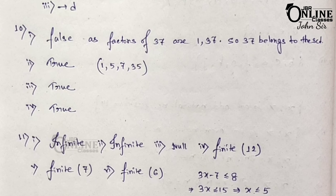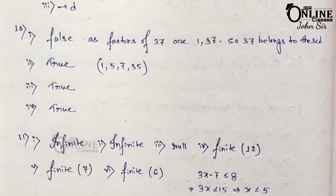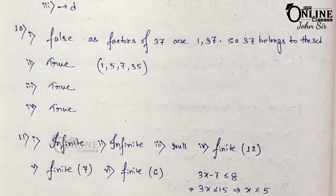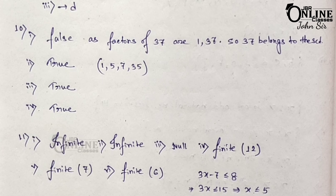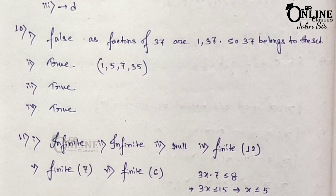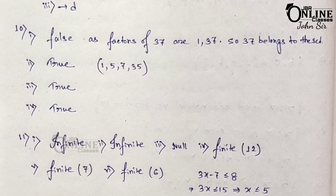Number 3: 496 belongs to y such that the sum of all positive factors of y equals 2y. When you find all the factors of 496 and sum them, you get 2 times 496. So the answer is true. Number 4 (last): 3 does not belong to the set where x satisfies x⁴ − 5x³ + 2x² − 112x + 6 = 0. This is also a true statement.